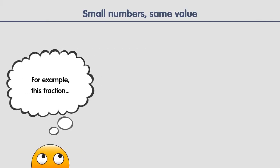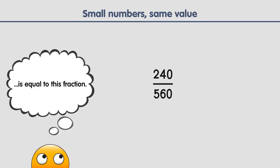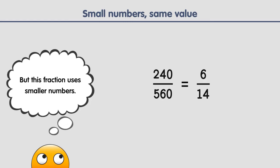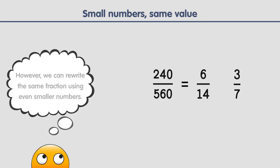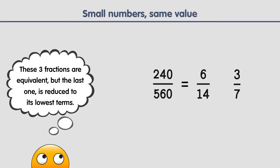For example, this fraction is equal to this fraction. They are equivalent. But, as we can see, this fraction uses smaller numbers. However, we can rewrite the same fraction using even smaller numbers in this way. These three fractions are equivalent, but the last one is reduced to its lowest terms.